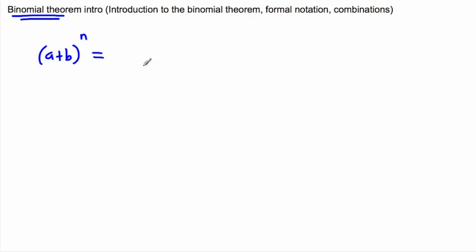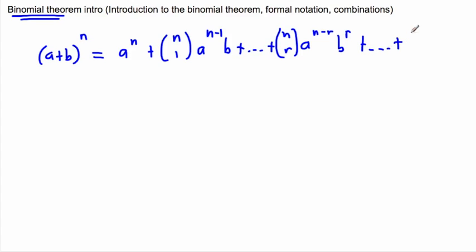a plus b to the power of n equals a to the power of n, and then we do this weird thing called n choose 1, all that times a to the power of n minus 1, times b to the power of 1. Plus, we're going to keep going until we get the generic middle term here. It's n choose r, then a to the power of n minus r, times b to the r. And then it goes plus, and you keep going until you reach b to the power of n.